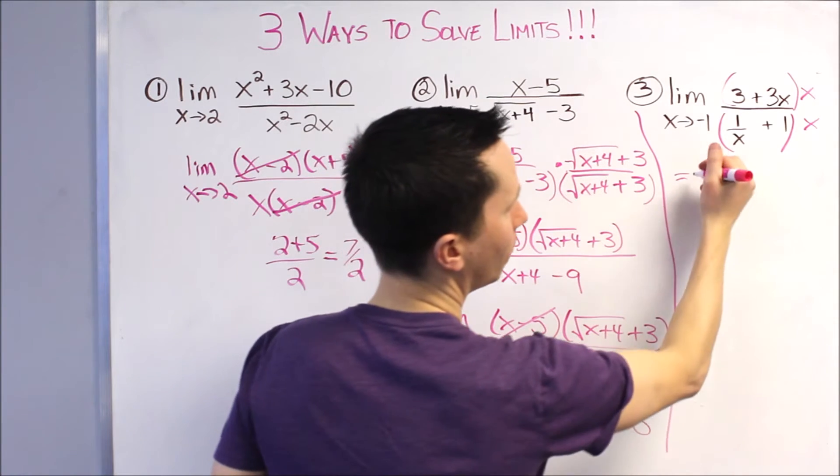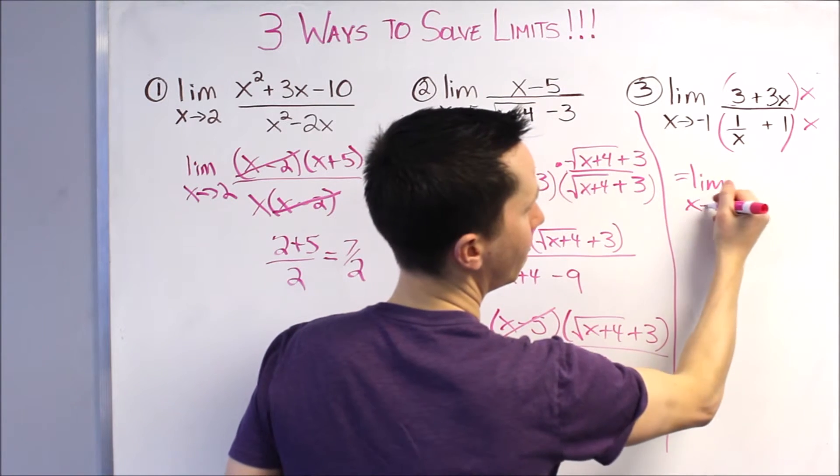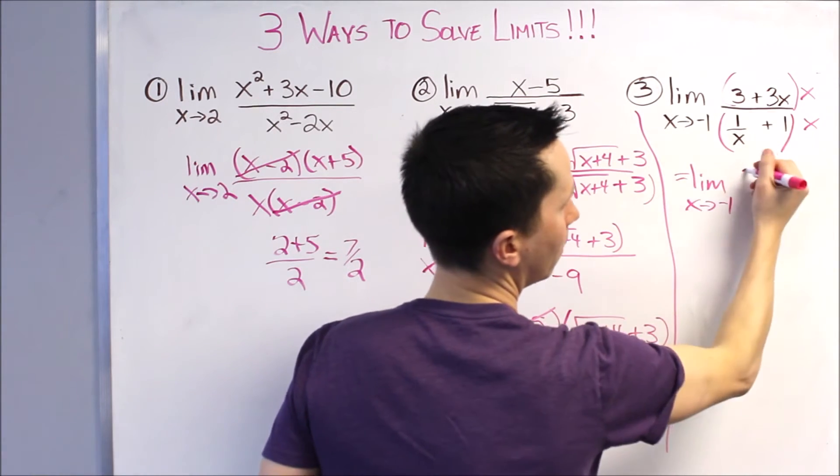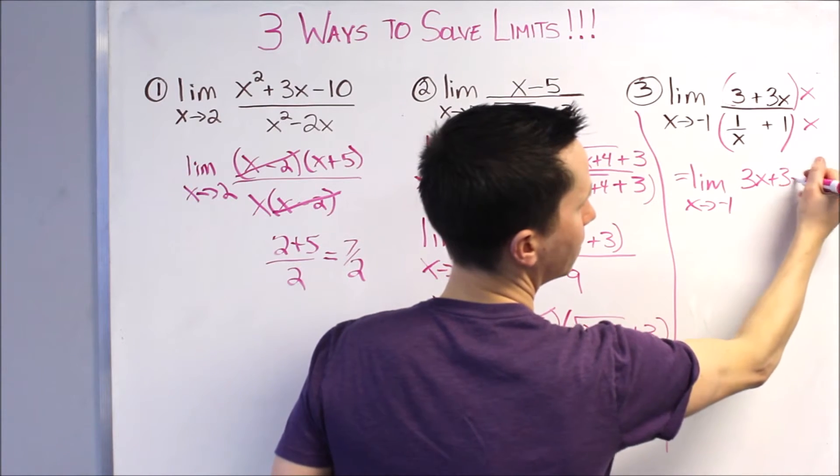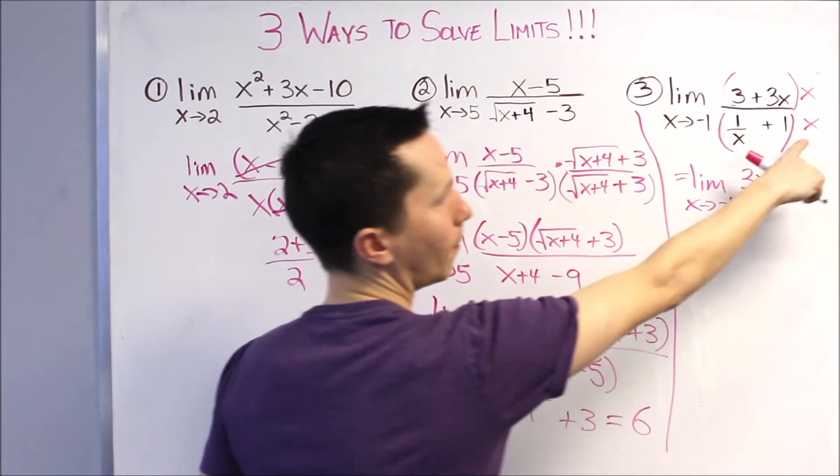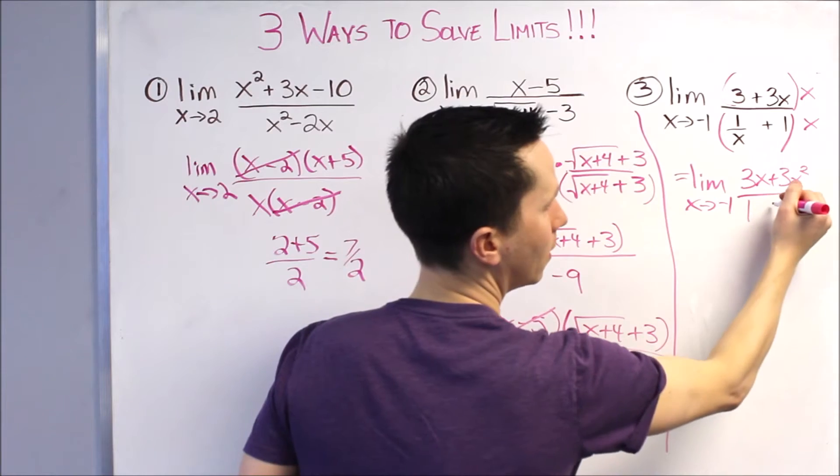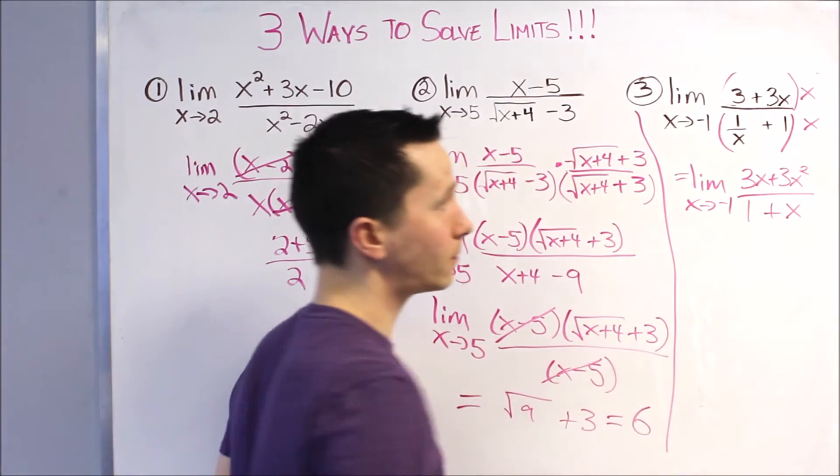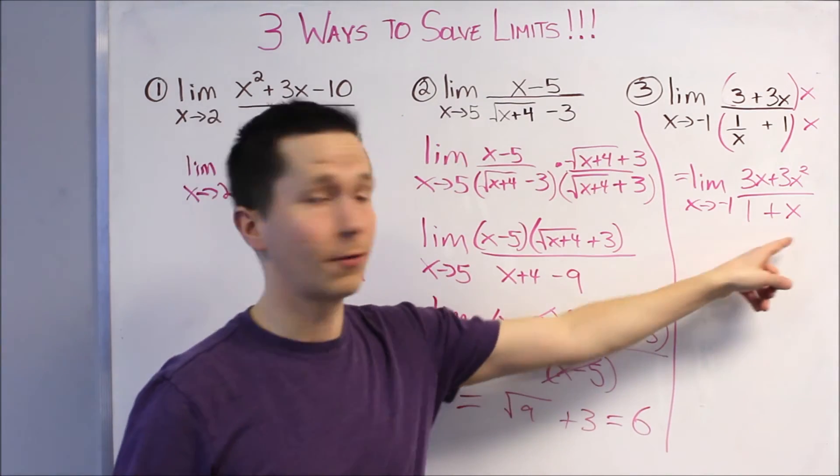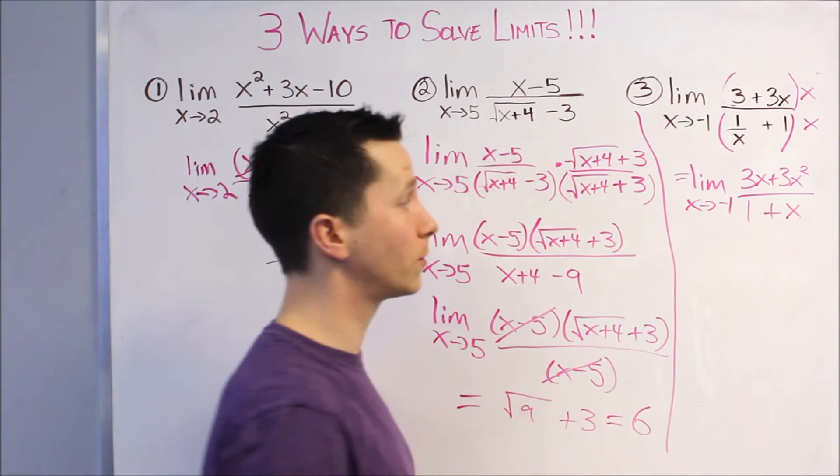Draw a little line here. Hopefully, that works out to be... We get 3X plus 3X squared on top. On the bottom, X over X is just 1 plus X. And, we still have an issue. If you plug in negative 1, the bottom still goes to 0.